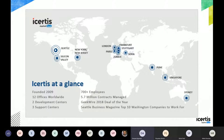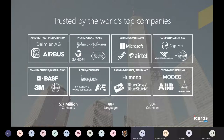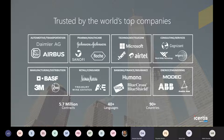We have around 12 offices worldwide with a couple more coming up soon. We have two development centers — one in Pune — three support centers, and we manage around 5.7 million contracts, which is a huge number. We have been consistently rated as a top company to work for in Washington State, winning many awards. Our customers come from automotive, transportation, Daimler, Microsoft, Cognizant, IT sector, retail — 5.7 million contracts, 40-plus languages, in 90-plus countries.